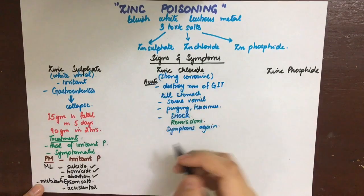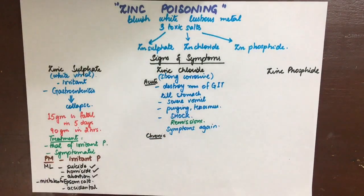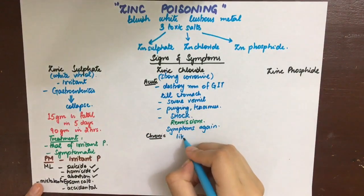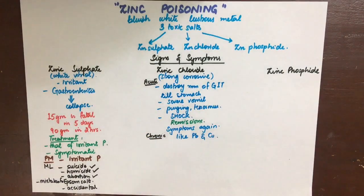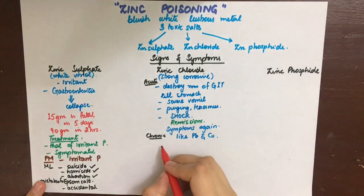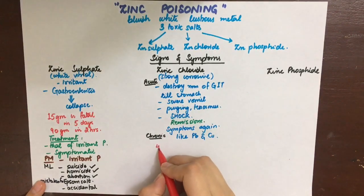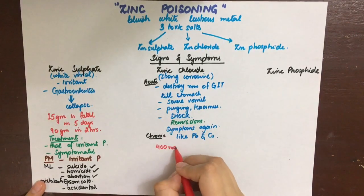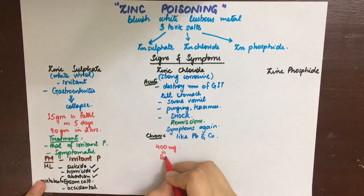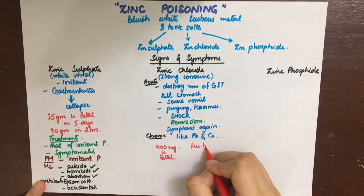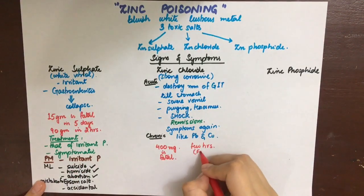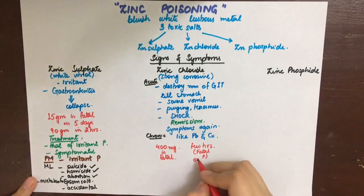The fatal dose is about 400 milligrams, making it more toxic than zinc sulfate. The fatal period is a few hours due to shock; if there is remission, several weeks can pass before death. Treatment should be that of a corrosive poison, and post-mortem appearances are also those of corrosive poisoning.